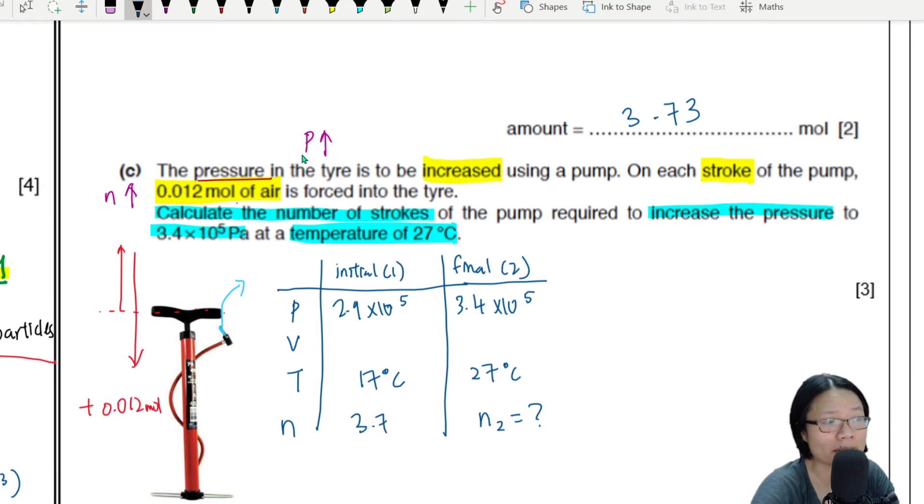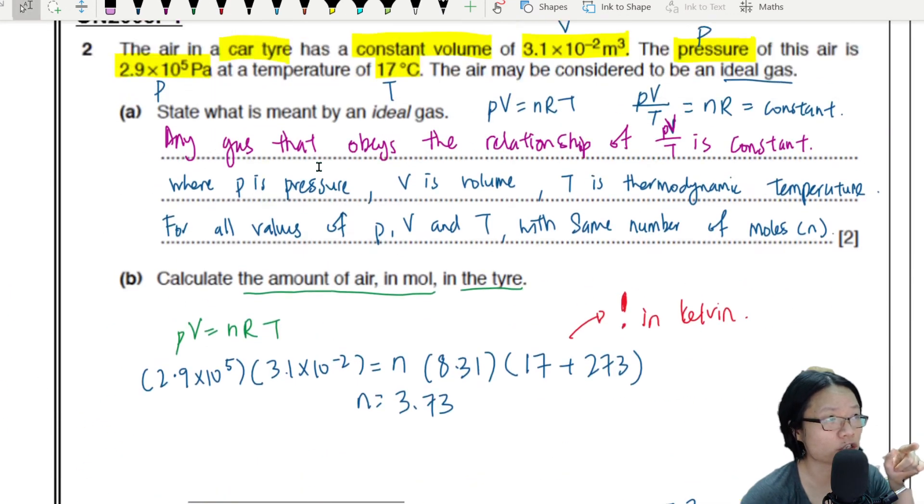The initial temperature is 17 degrees celsius, and the initial number of moles as calculated in part B is 3.73. Okay, teacher, I got everything except volume. Volume, how are this? Volume how, how?